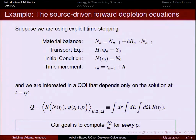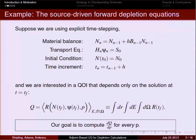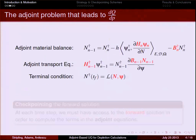Here, for those of you who like equations more than words, is an example forward problem. Suppose we're using explicit time stepping to go forward: given an initial condition for the densities, we advance the densities in time with an explicit time step and then solve a steady-state transport equation to update the neutron flux. The transport operator H depends on the solution to the material balance equation n, and vice versa, so these are nonlinear coupled equations we advance through time. At the end we're interested in a QoI that, for this simple example, depends only on the solution at t equals t_f — written as an integrated functional of the solution. Our goal is to compute dQ/dp for every p.